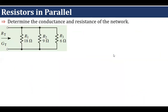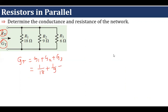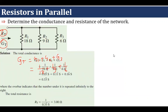Now solve the equation — we have to find RT along with Gt. First, calculate Gt. We know the net conductance equals the sum of individual conductances: G1 + G2 + G3 = 1/18 + 1/9 + 1/6. Calculating this gives 0.33 Siemens.